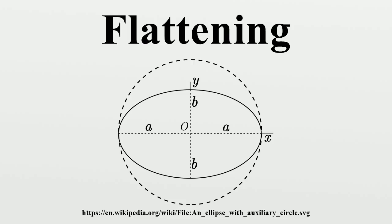Other values in the solar system are: Jupiter, f equals 1/16th; Saturn, f equals 1/10th; the Moon, f equals 1/900th. The flattening of the Sun is approximately 9 times 10 to the minus 6.